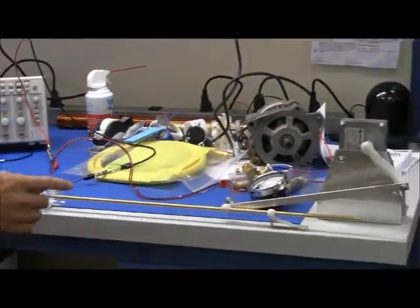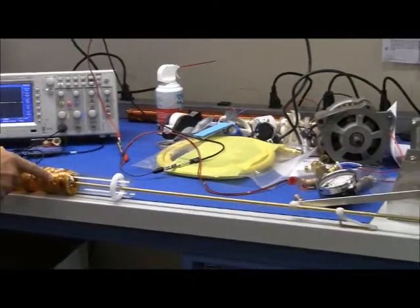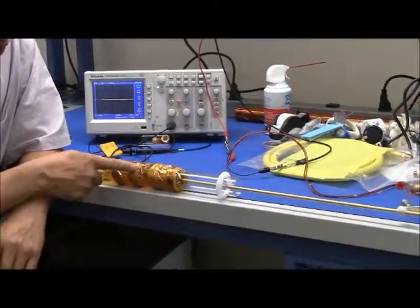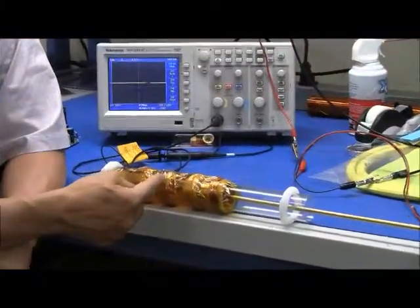Now the motor turns a crank and drives a rare earth magnet that is inside the tube. And here we have four solenoids that are connected in series.